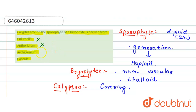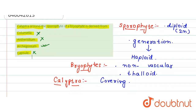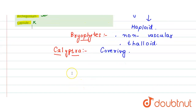The third option, archegonium, is the correct option because it is a female structure and calyptra develops from the archegonium. The fourth option, capsule, is also just a covering part which develops from the archegonium, but it is the wrong option here.